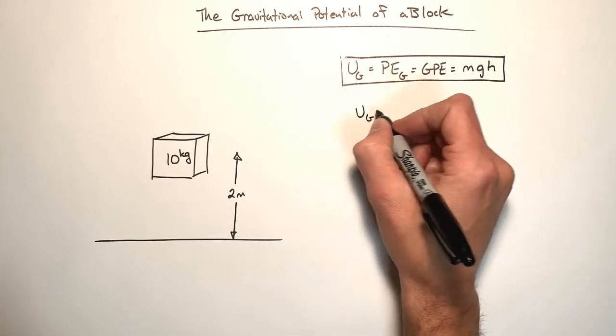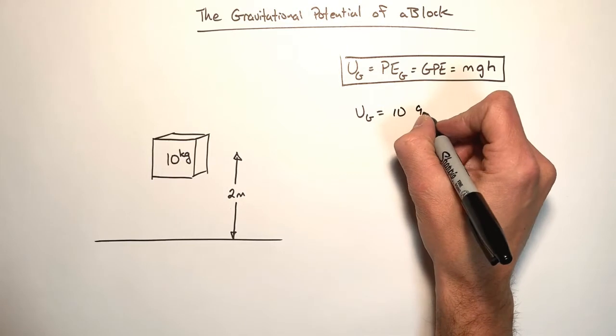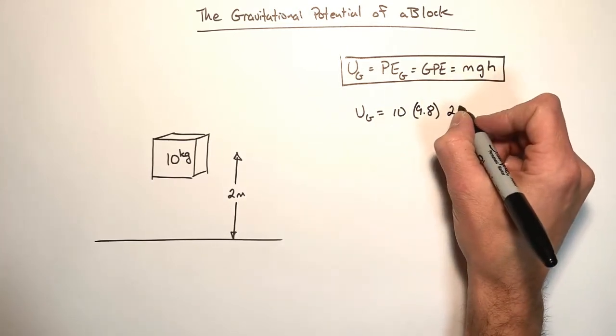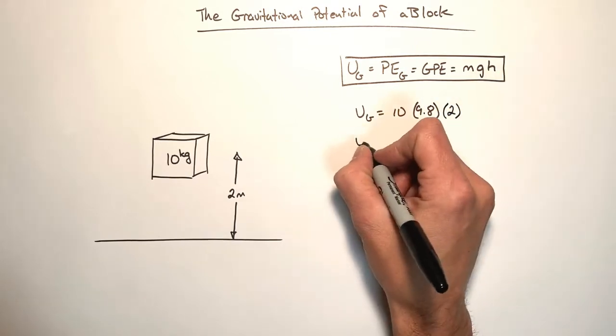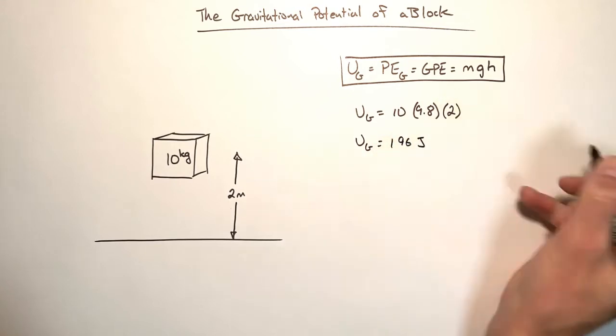So the gravitational potential energy is going to be 10 times 9.8 times the height. That's two. We'll get the gravitational potential energy is 196 joules.